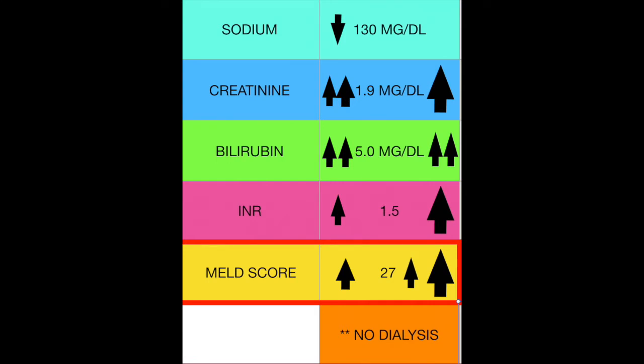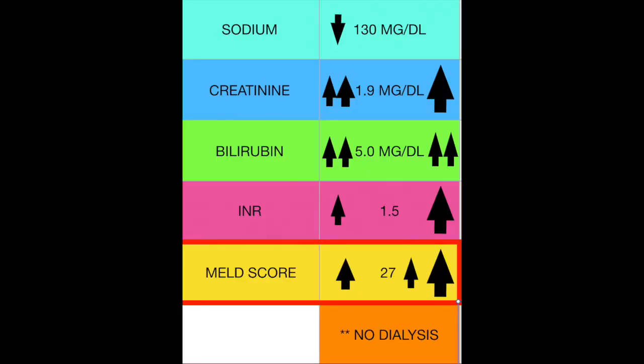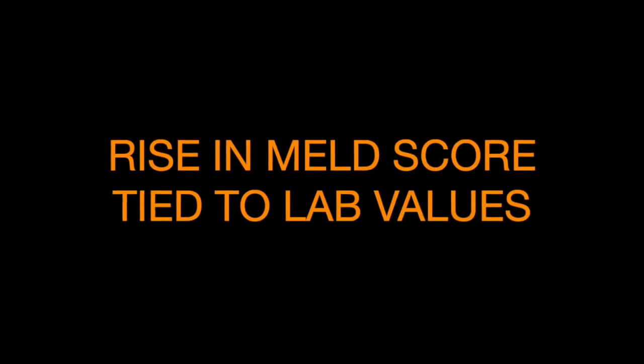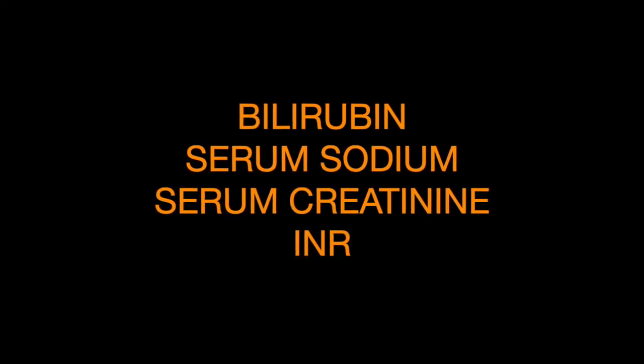The other option: if the numbers are getting worse but they're not on dialysis. The serum sodium is 130, creatinine is still elevated at 1.9, but this time the bilirubin is 5 — they are jaundiced, their skin and eyes are yellow. The INR is 1.5. Their MELD score is 27 without dialysis. So you can see that the MELD score is going to be tied to those four lab values — bilirubin, serum sodium, creatinine, and INR. Whether or not you are receiving dialysis will be another wild card that will bump up the MELD score and your likelihood of getting a transplant.